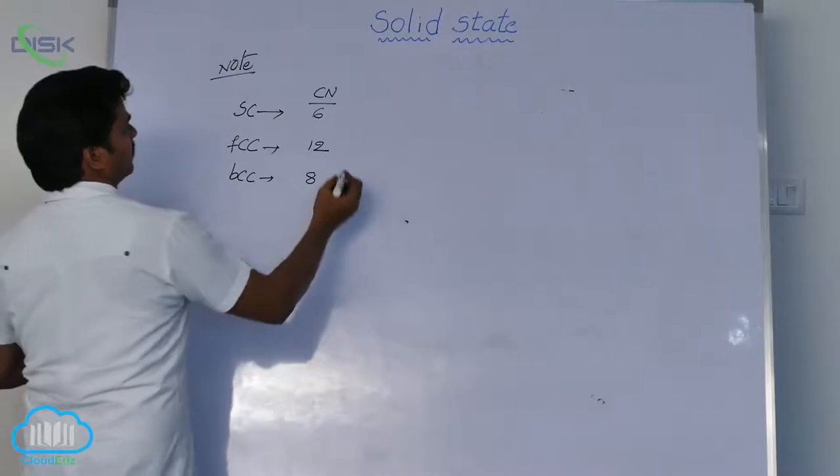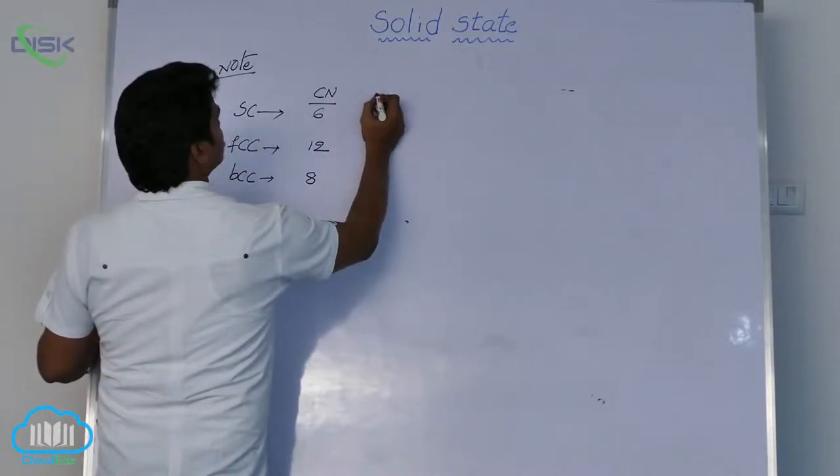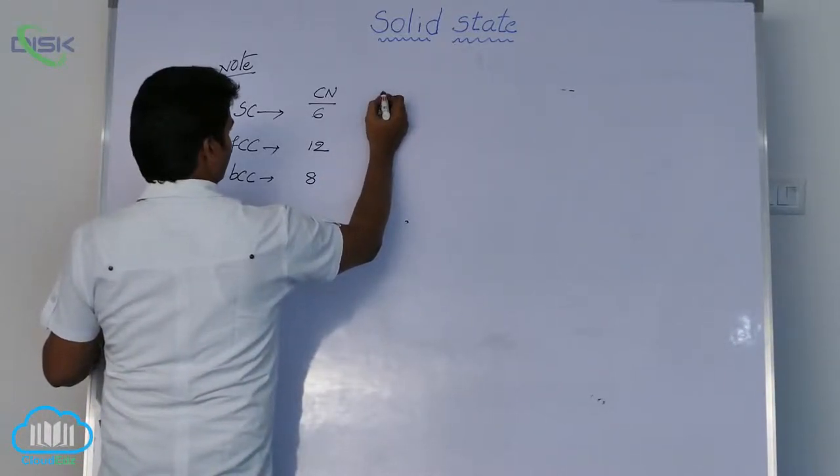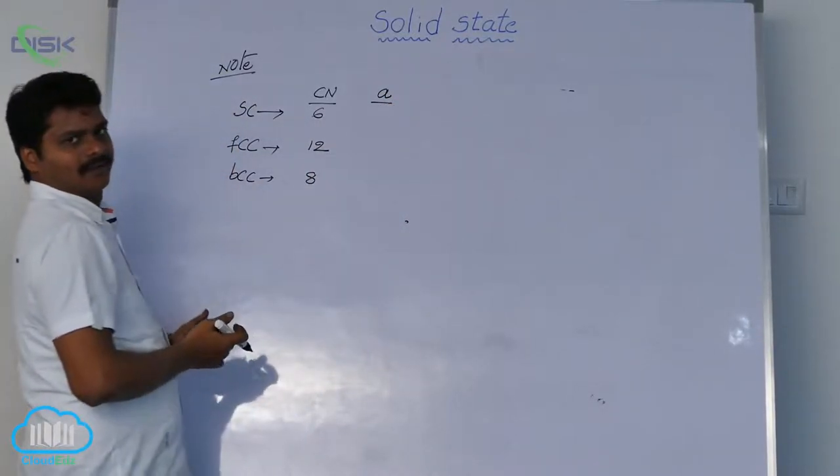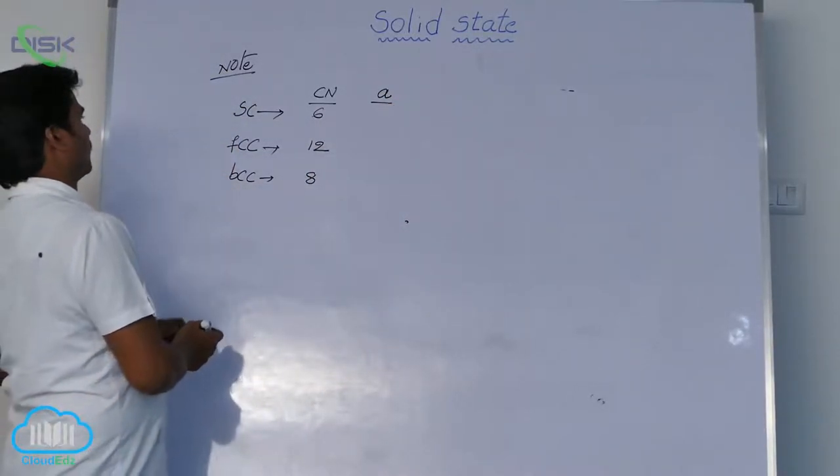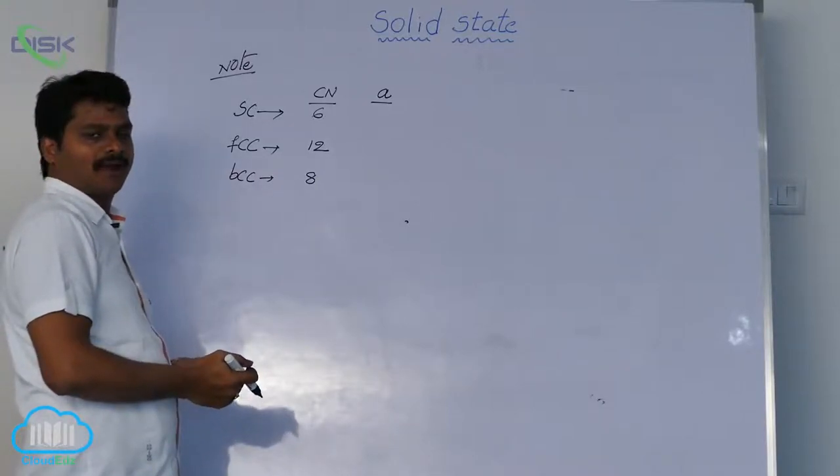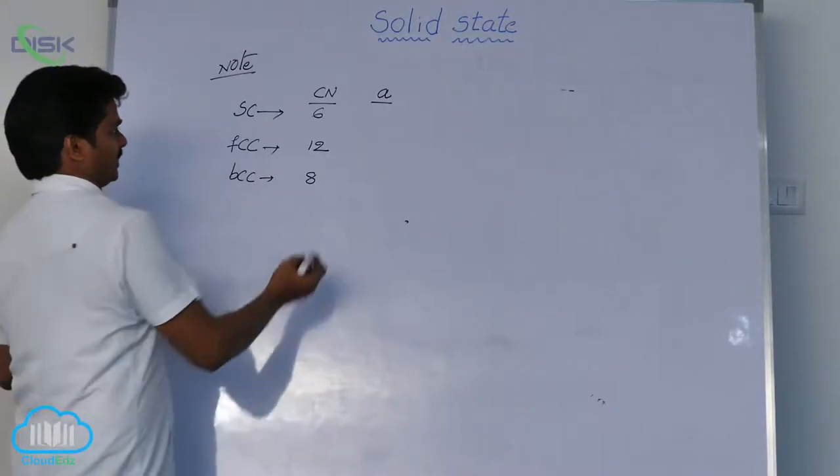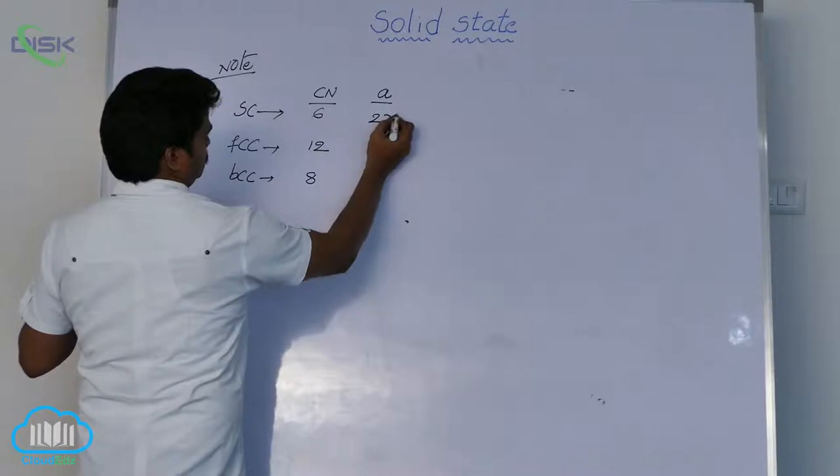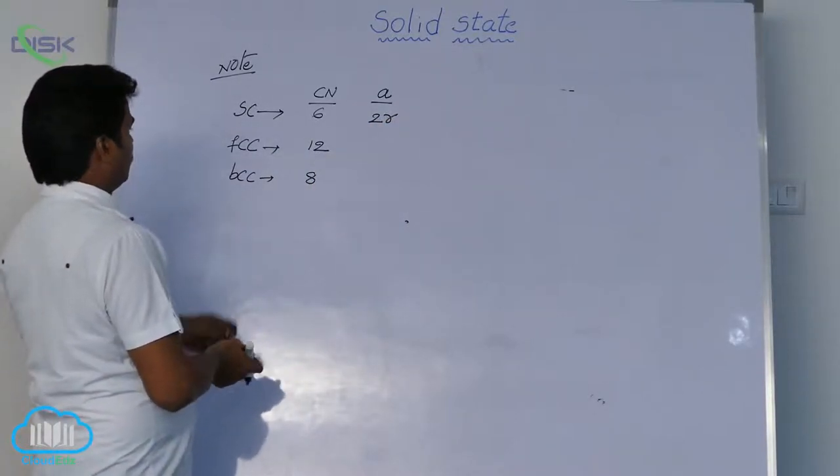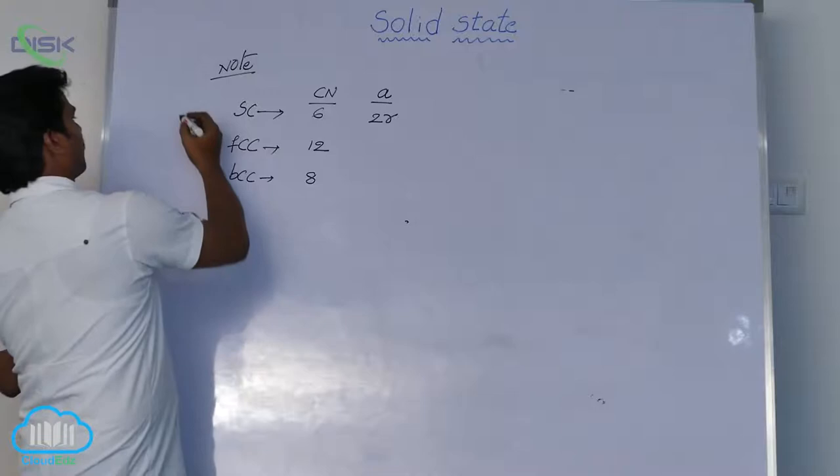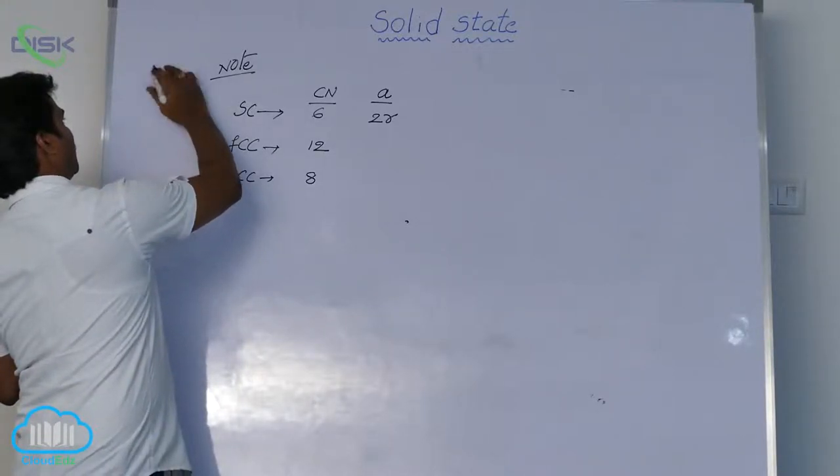Similarly, the relationship between edge length and radius. For FCC, we have a formula. Body diagonal length is √3a, face diagonal length is √2a.